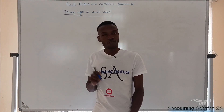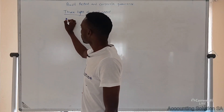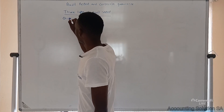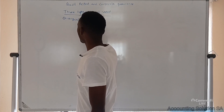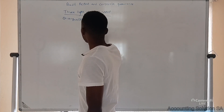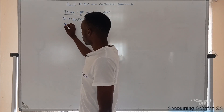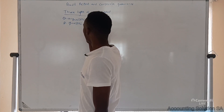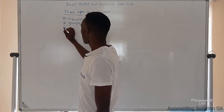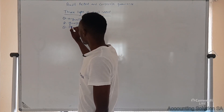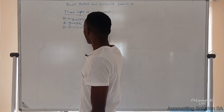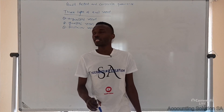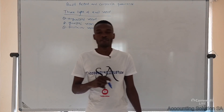The first one we have is the unqualified report. Number two we have a qualified report. Then the third one we have a disclaimer report. So these are the three types of audit report that we have.